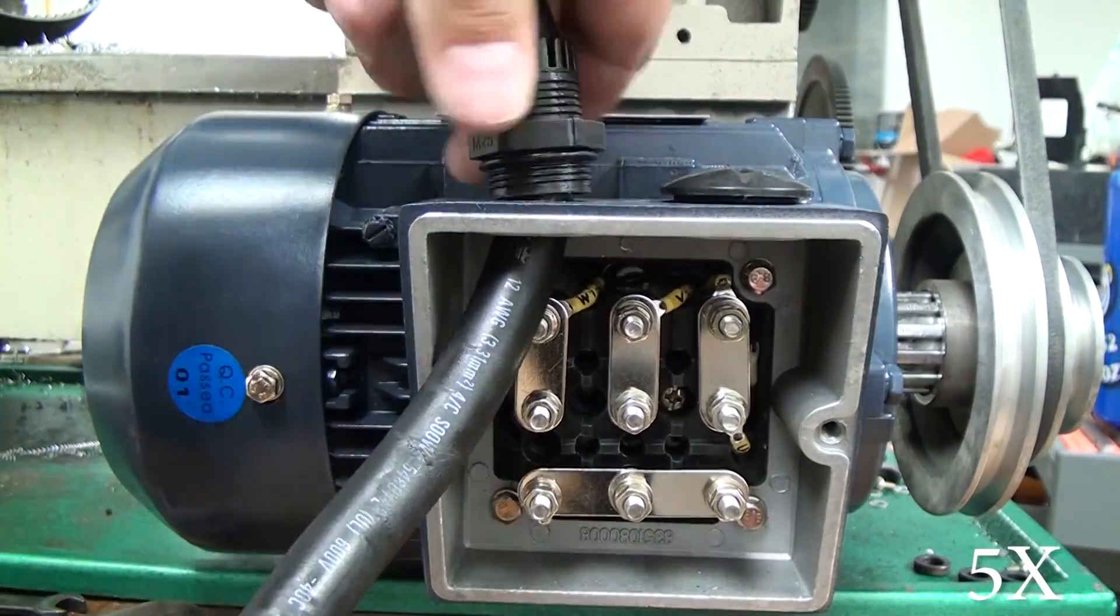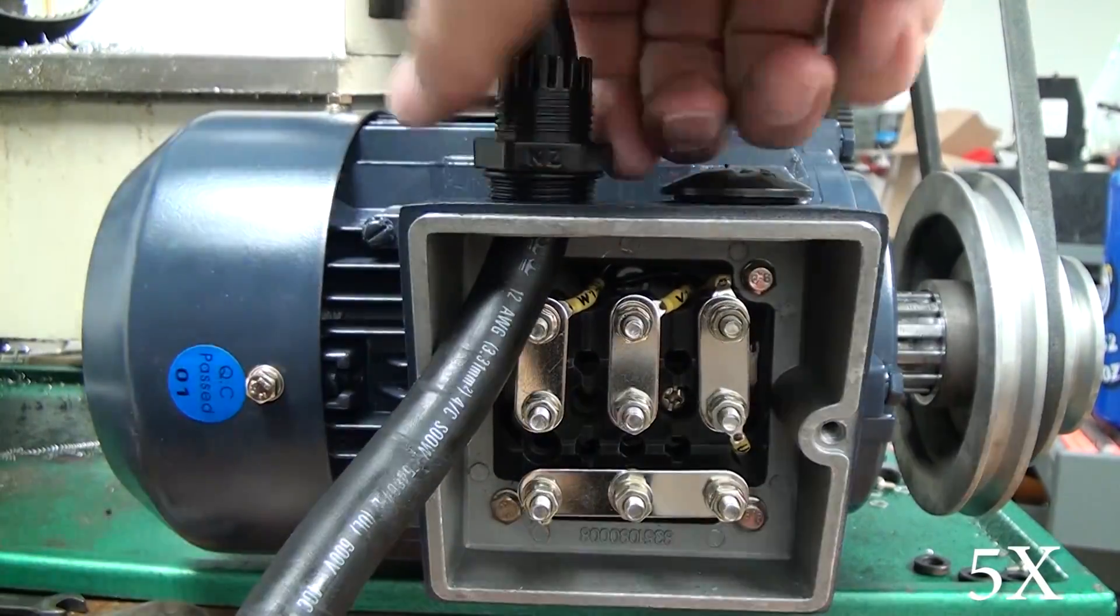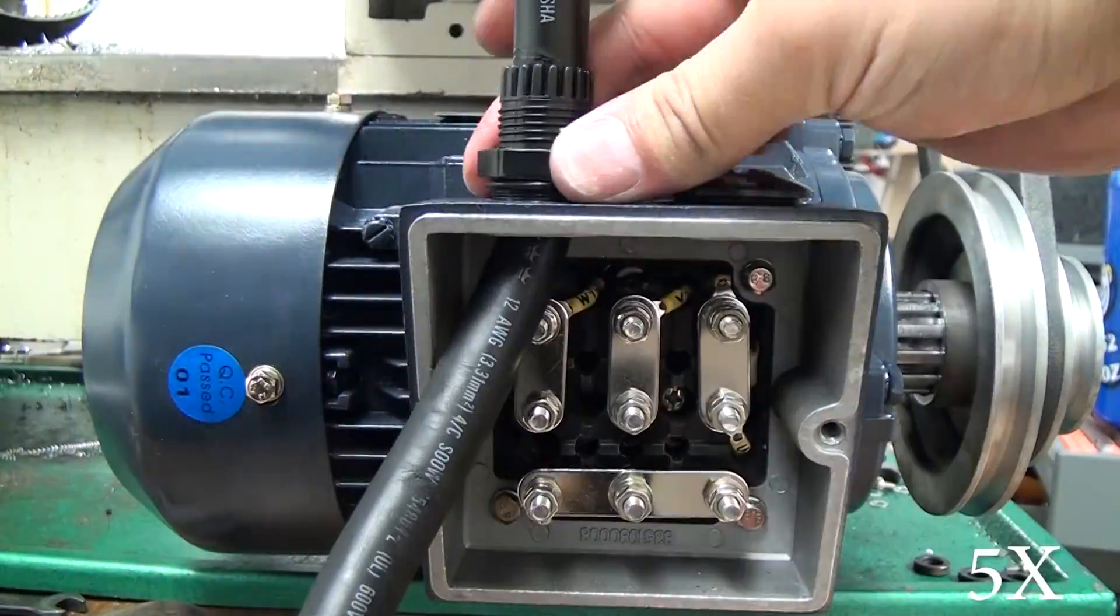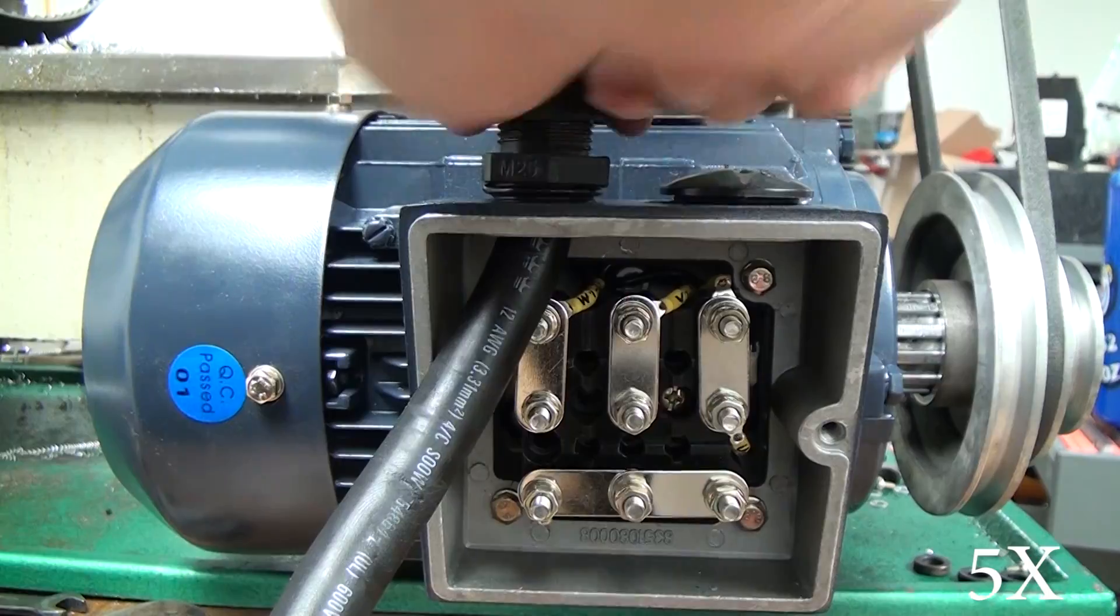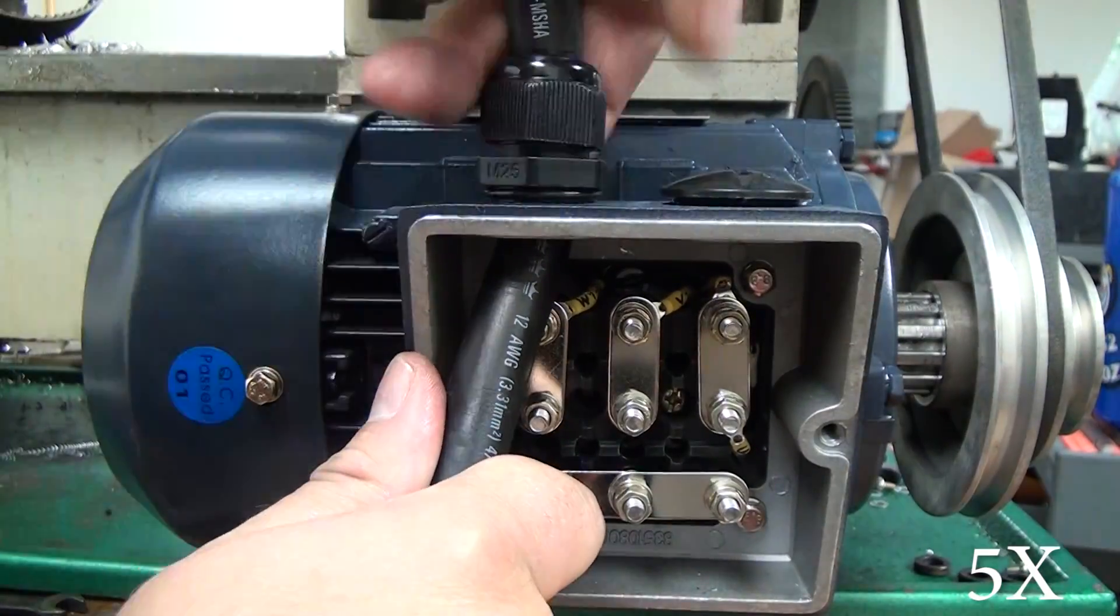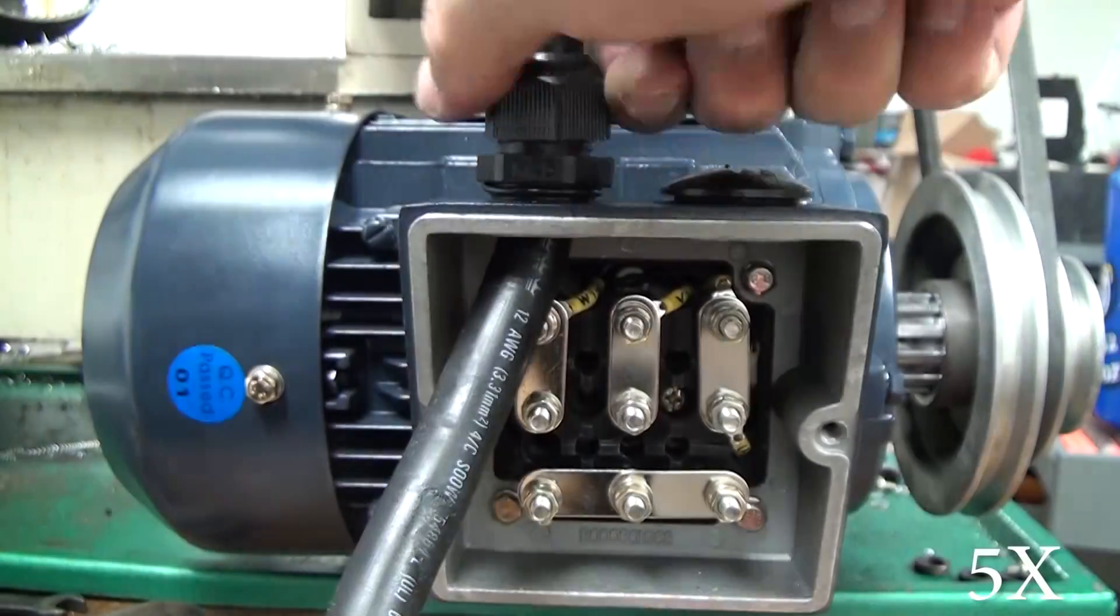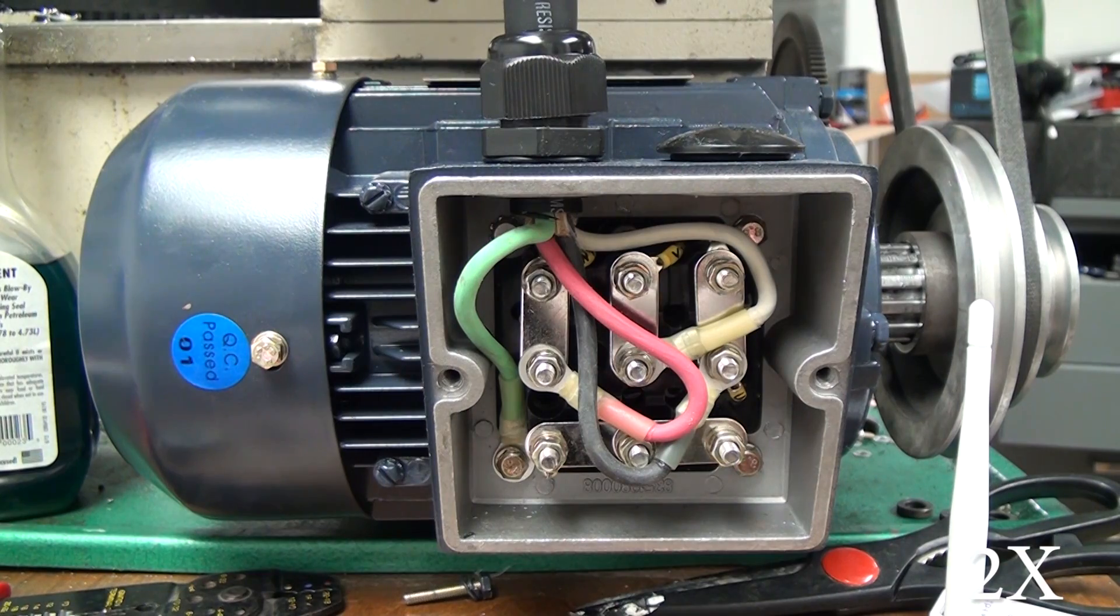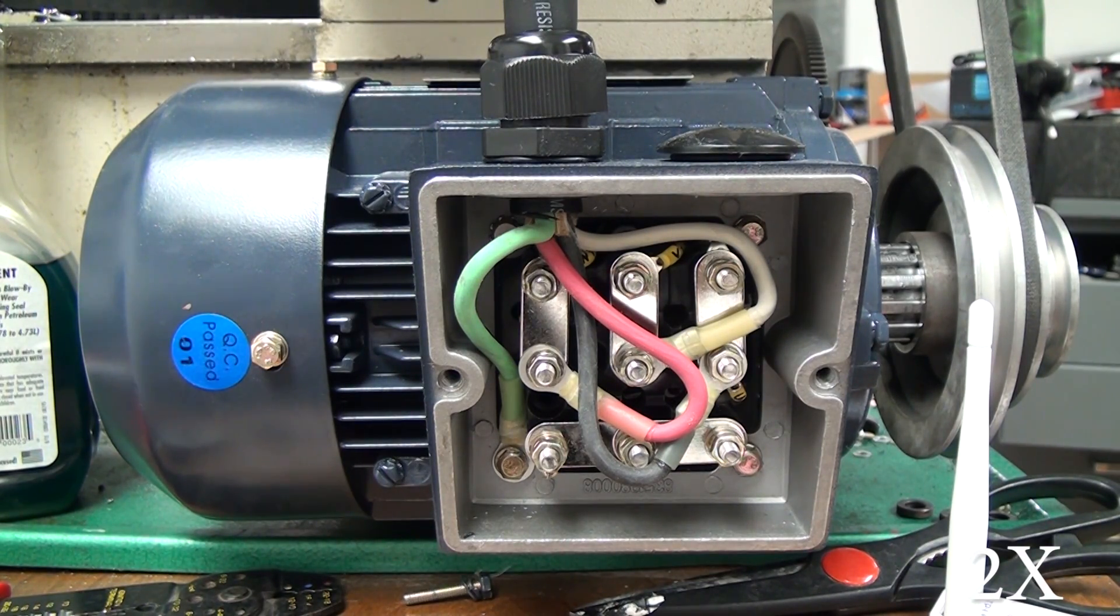I wired mine up with 12 gauge, which is just super overkill. I went to I think it was Lowe's or Home Depot looking for 14.4 in this rubberized, it's basically extension cord you can buy by the foot. But they didn't have any 14.4, so I bought 12.4. It's so overkill. Get yourself some 18 gauge. That's all you're going to need. This motor only pulls like four amps. You don't need 12 gauge for four amps.